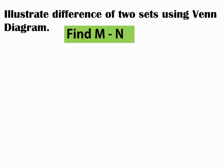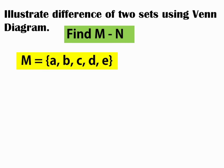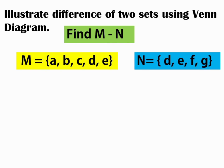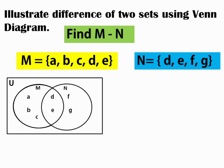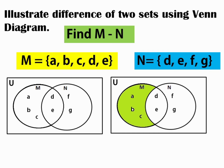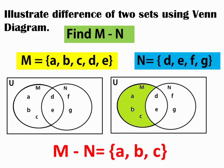Another example: find M minus N, if M is equal to {A, B, C, D, E} and N is equal to {D, E, F, G}. In a universal set, we must draw two circles to represent set M and set N. Observe that in set M and N, there is a common element. Therefore, we must show that set M and set N is a joint set. To represent it in a Venn diagram, the shaded region will be our answer. Therefore, M minus N is equal to {A, B, C}.